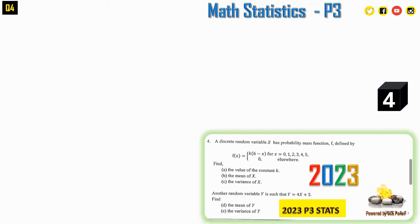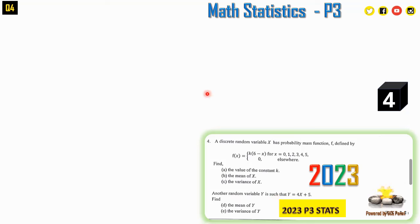Question 4: A discrete random variable X has PMF f(x) = k(6 − x) for x = 0, 1, 2, 3, 4, 5 and 0 elsewhere. Find (a) the constant k, (b) the mean of X, (c) the variance of X. A second variable Y = 4X + 5 — find the mean and variance of Y.